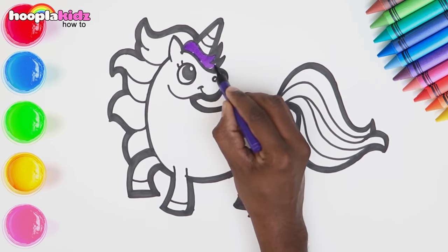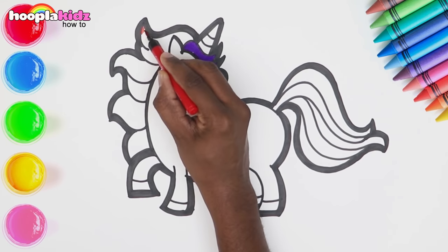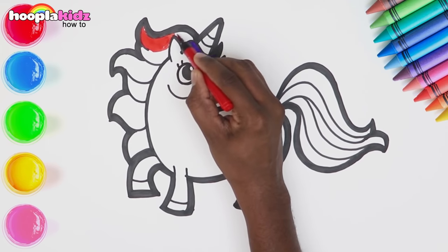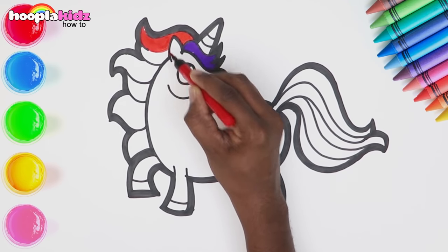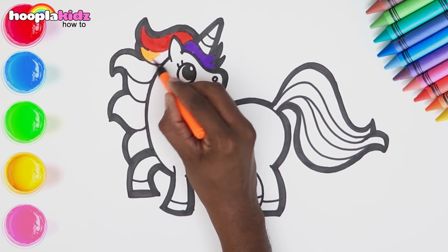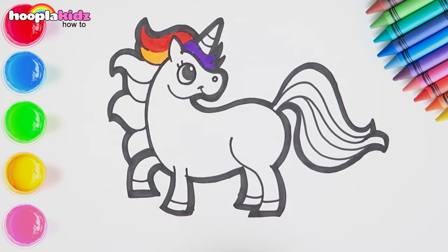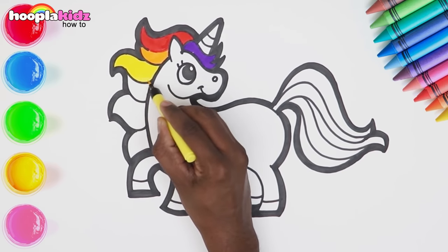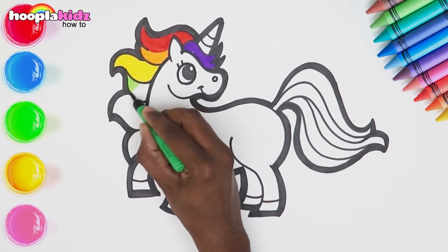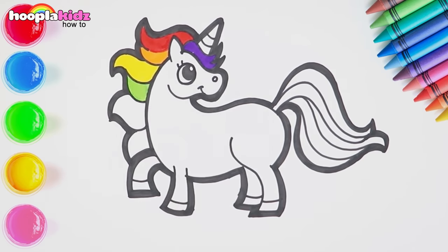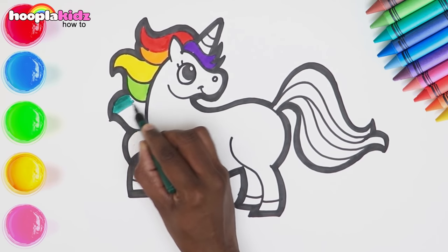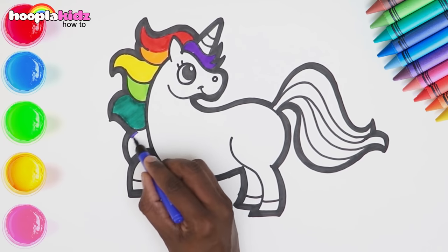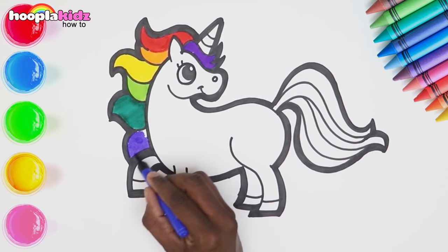Here comes the real magic. Let's colour in. First comes purple, then red for the mane. Orange and some yellow too. A lovely green, a darker green too, and lastly purple. How beautiful does our unicorn look?